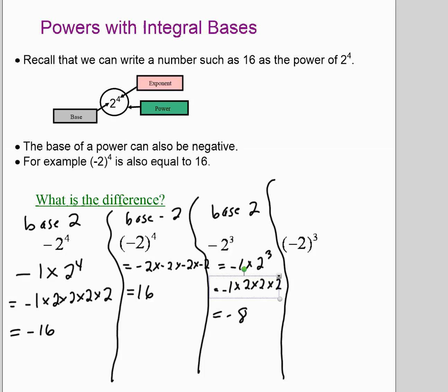This last one, (-2)^3, because it has the brackets, that's telling you that the base is negative 2. That negative 2 will get repeated over and over. In this case, the negative 2 gets repeated 3 times. When you have an odd number of negatives, the first two will cancel out, but then you still have one left. An odd number of negatives will always give you a negative answer, and so that will be negative 8.